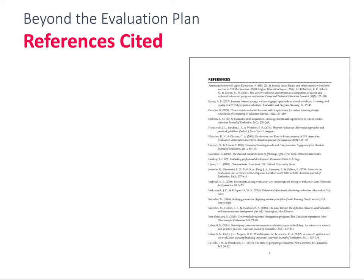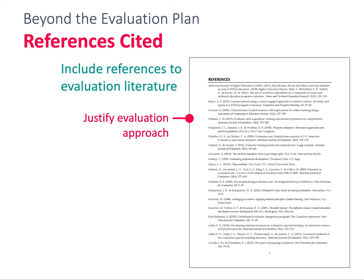Finally, all proposals should have references, which are separate from the 15-page project description. Including up-to-date and relevant references to evaluation literature in your proposal description can help show that the evaluation is grounded in and building on current knowledge and practice. If you're going to use a specific evaluation approach or instrument, provide citations to support its use in your context. There's no page limit for the references cited document, but you should only include references that you mention in your project description and that are pertinent to your work.